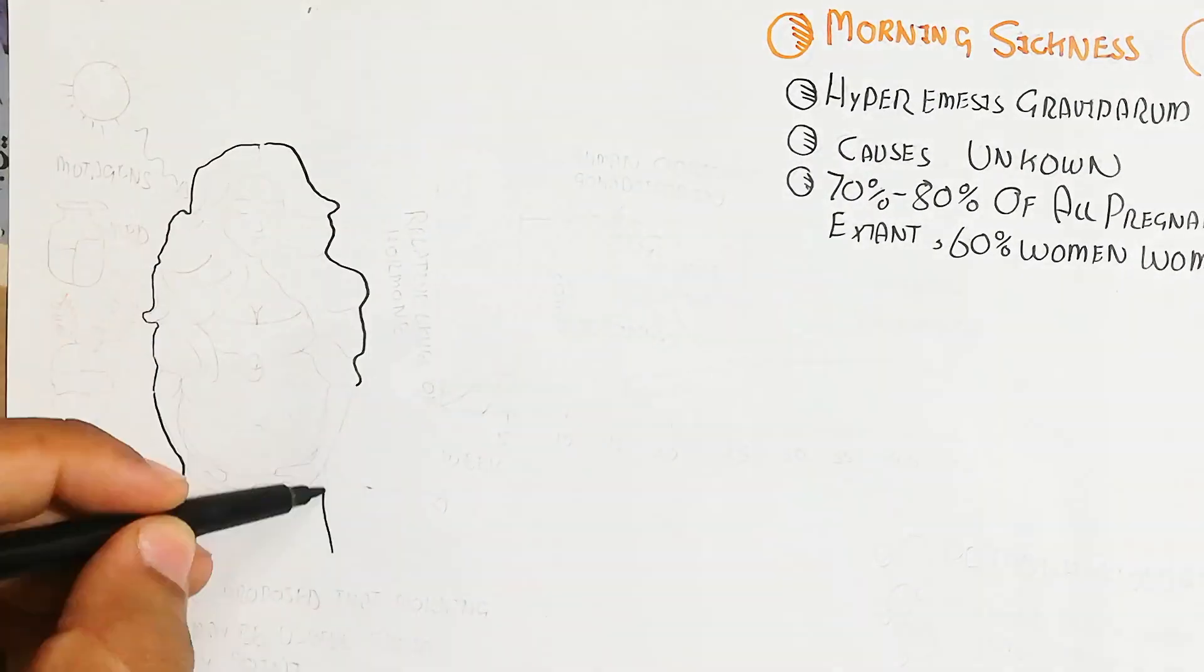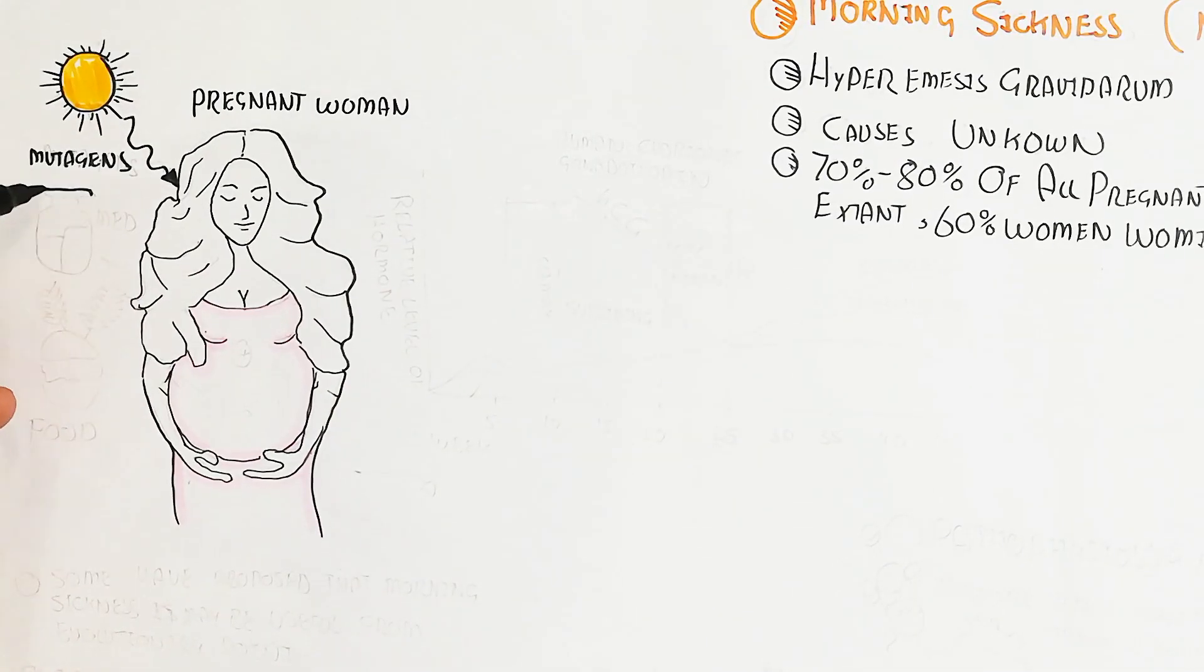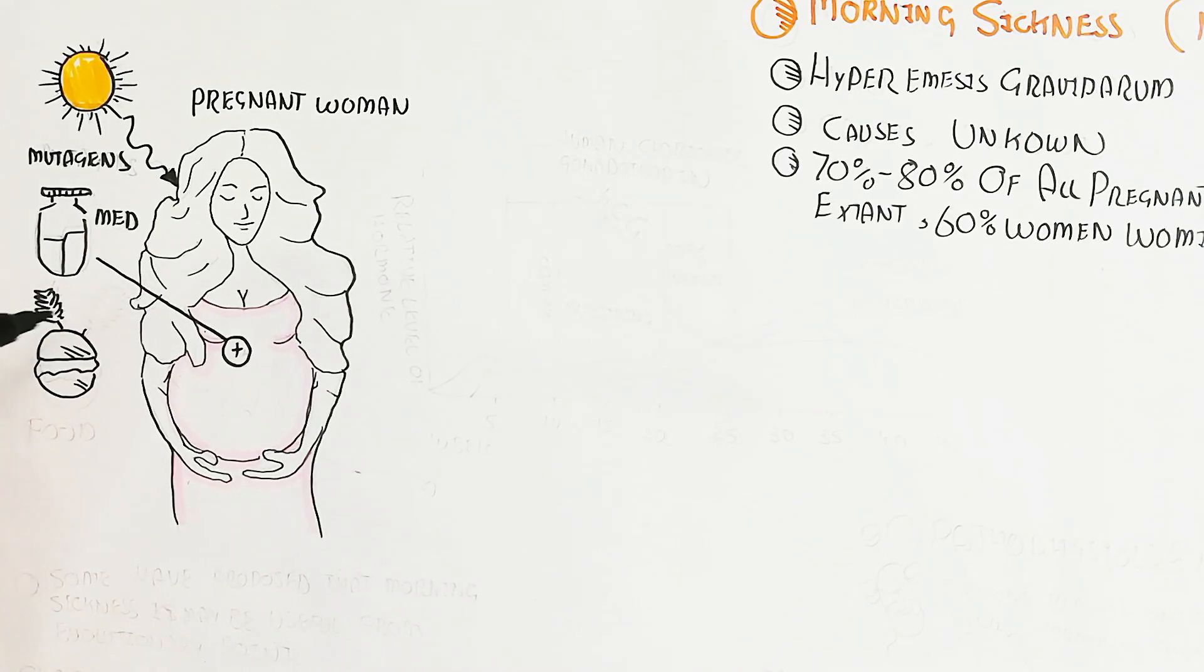60 percent of women experience vomiting. The pregnant woman can affect the fetus through mutagens and medicines and food, which can influence the fetus and emesis can be possible.